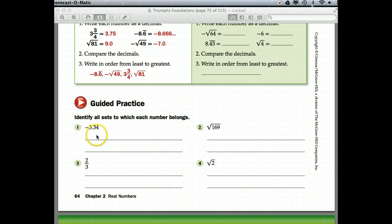Okay, did you get that this one is real and rational? The square root of 169, what is the square root of 169? Did you get 13? Well, 13 is real, rational, an integer, whole, and counting. 2/3 is real and rational. And the square root of 2 is real, but it is irrational. Okay, good job.